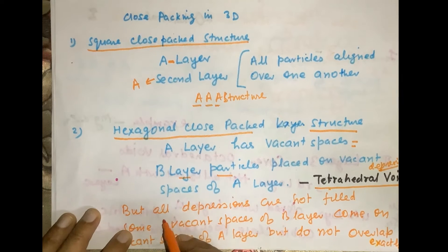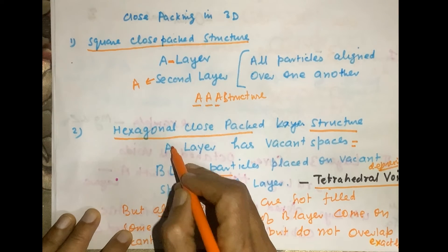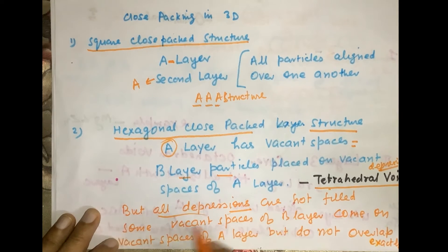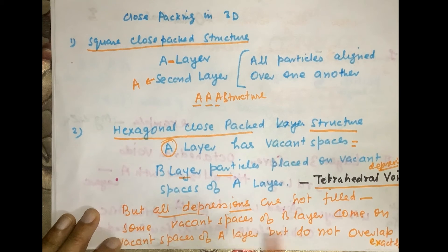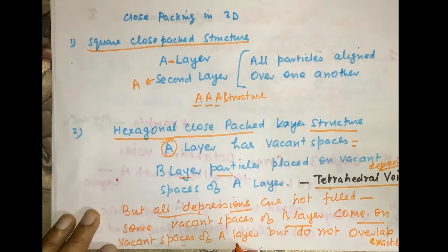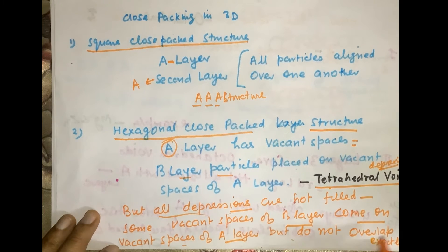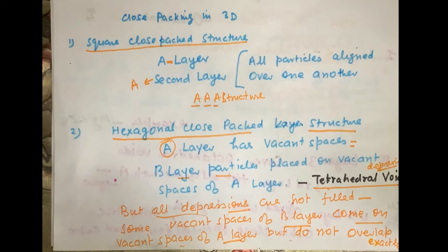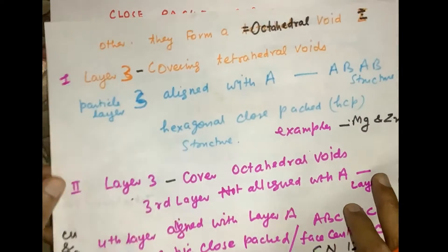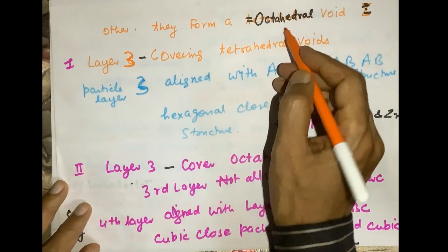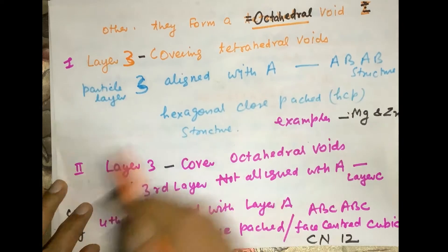When the particles of layer B cover the vacant spaces of layer A, a tetrahedral void is created. However, not all the depressions of layer A are filled completely by the particles of layer B. Some vacant spaces of layer B come over vacant spaces of layer A, but they do not overlap exactly, and another void is created.